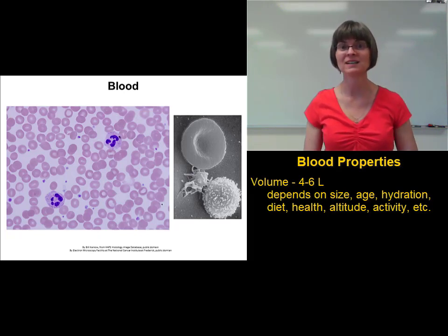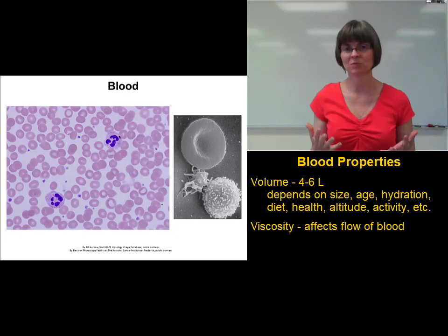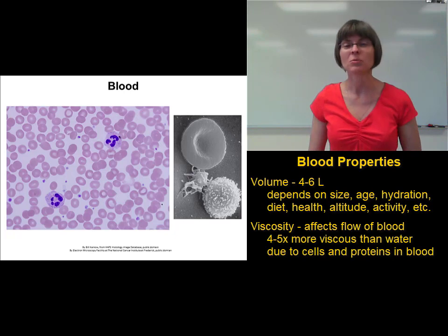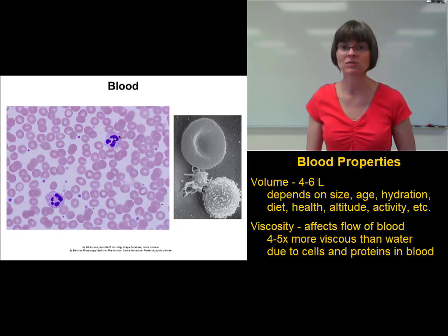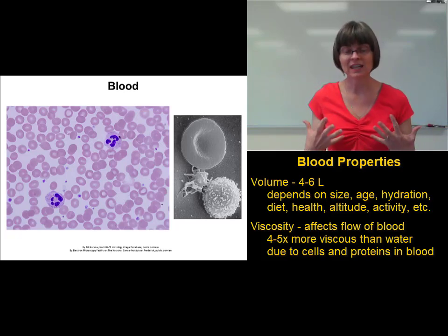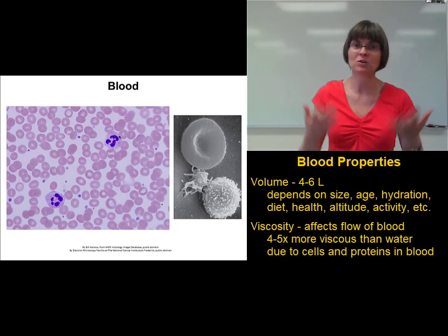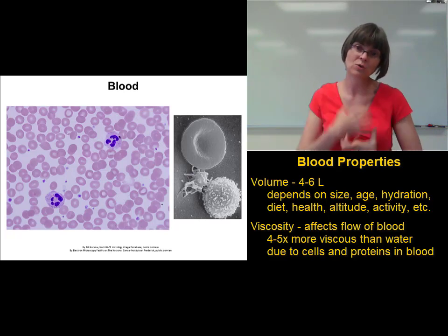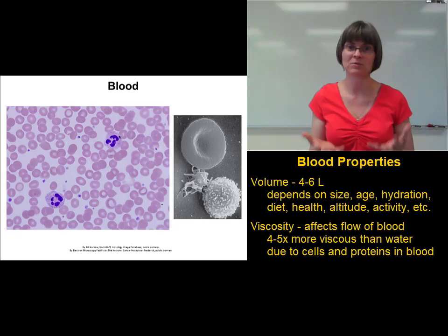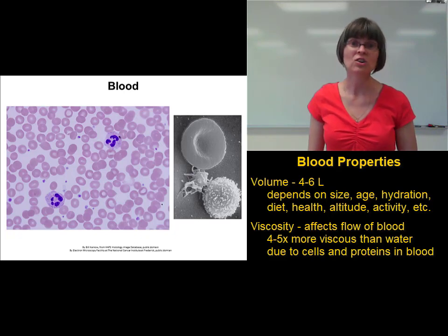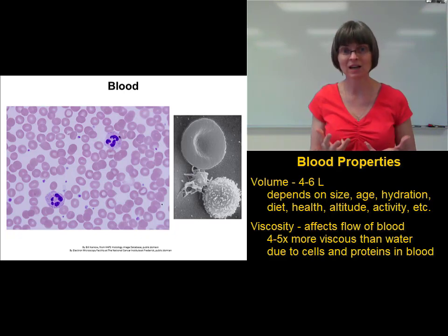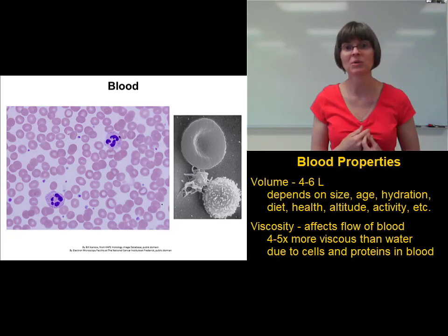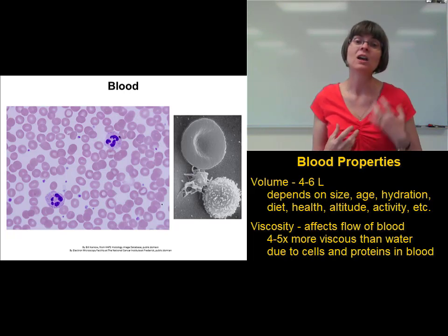The second important property of blood is its viscosity. Viscosity refers to the thickness of the blood, or more accurately, resistance to flow. Blood really is thicker than water — it is 4 to 5 times more viscous than water. If blood is too thin, it doesn't support the structures suspended in it and blood cells would fall to the bottom. If blood is too thick, it puts a lot of strain on the heart. Two things contribute to viscosity: the blood cells themselves, and the proteins dissolved in the plasma — more of either raises viscosity.